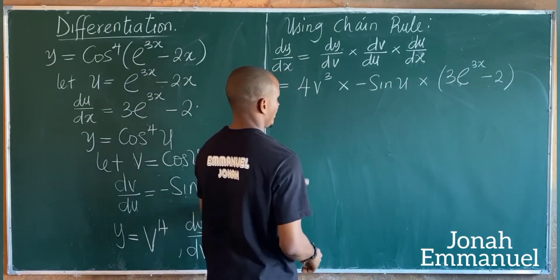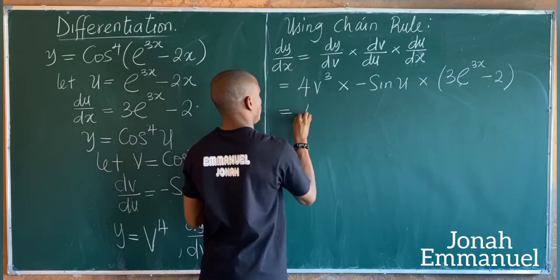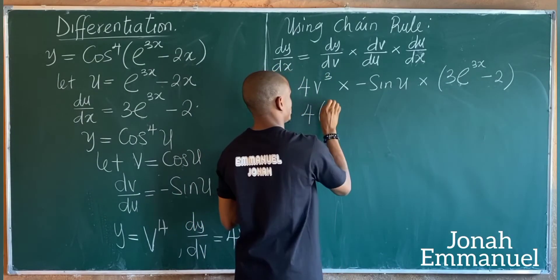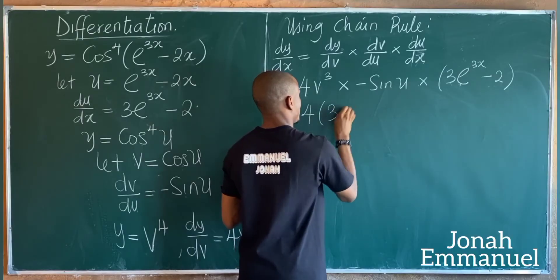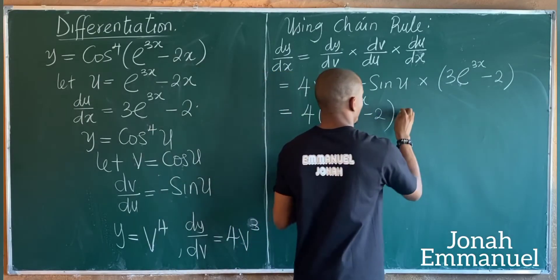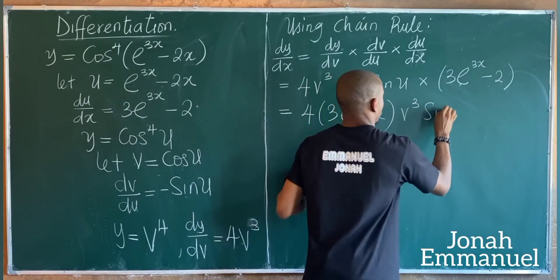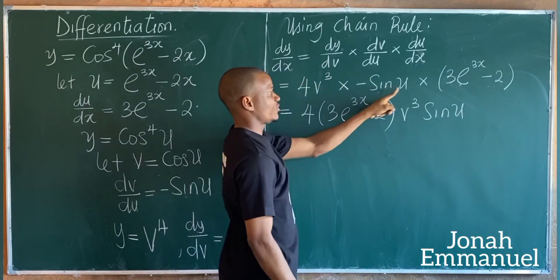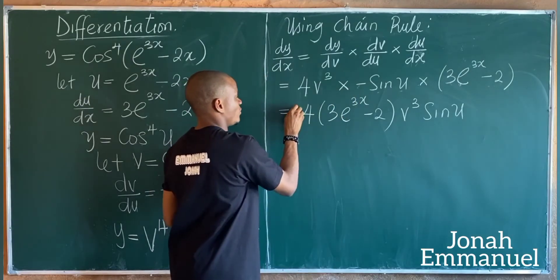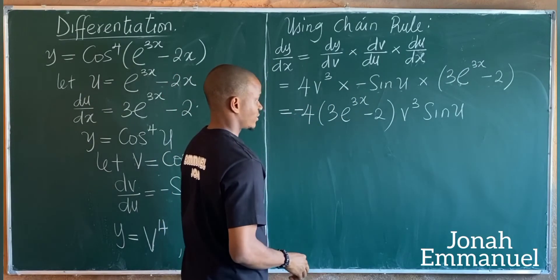Multiplying everything: 4 times (3 exponential 3x minus 2) times v cubed times sin u. Since sin u has a minus sign, it becomes minus 4 times (3 exponential 3x minus 2) times v cubed times sin u.